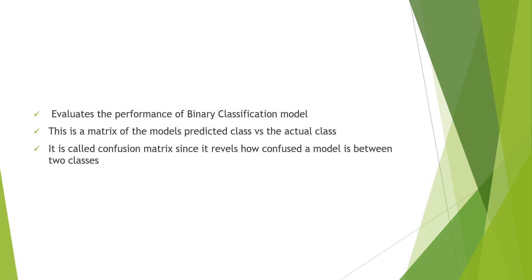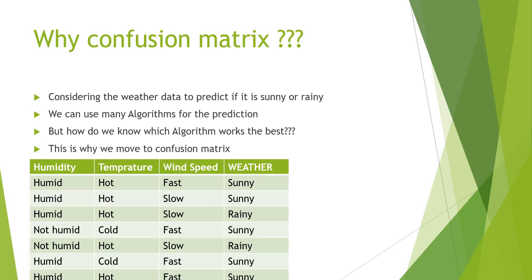It is called confusion matrix since it reveals how confused a model is between two classes. Suppose we have binary classification data of the weather to predict if it is rainy or sunny.